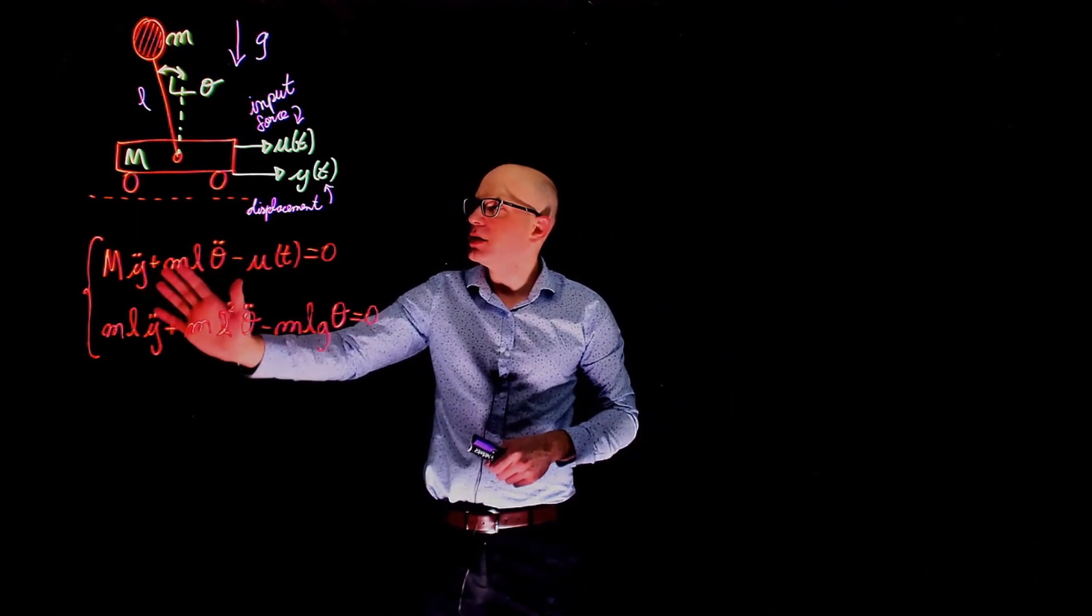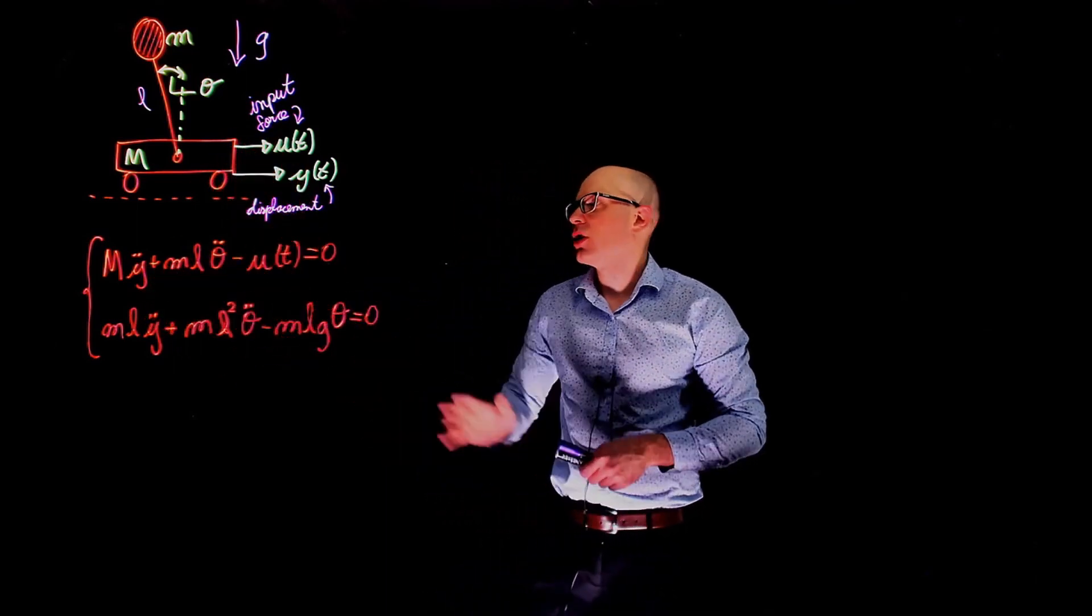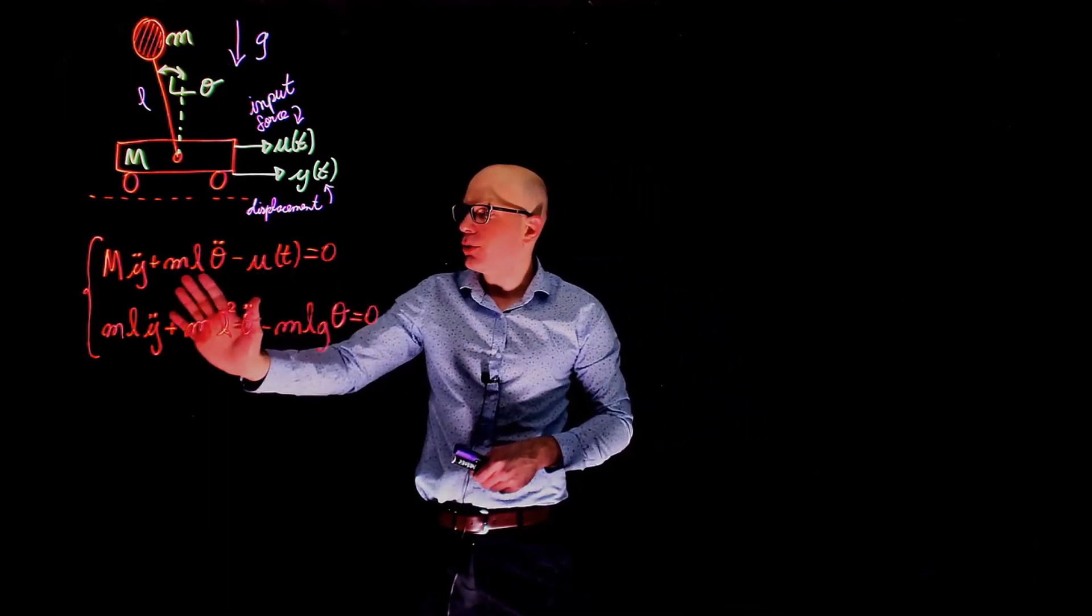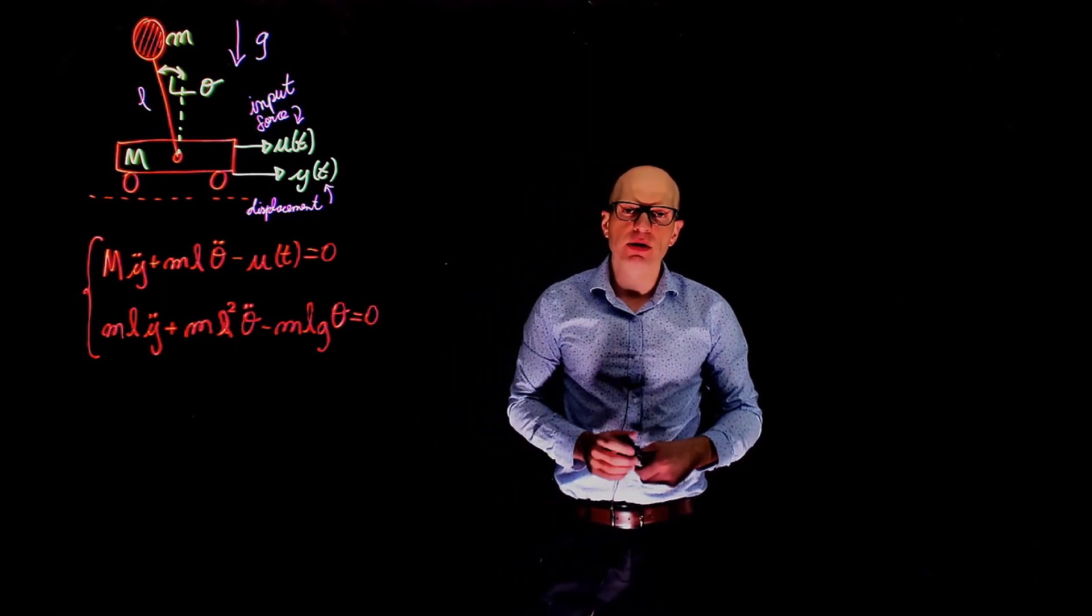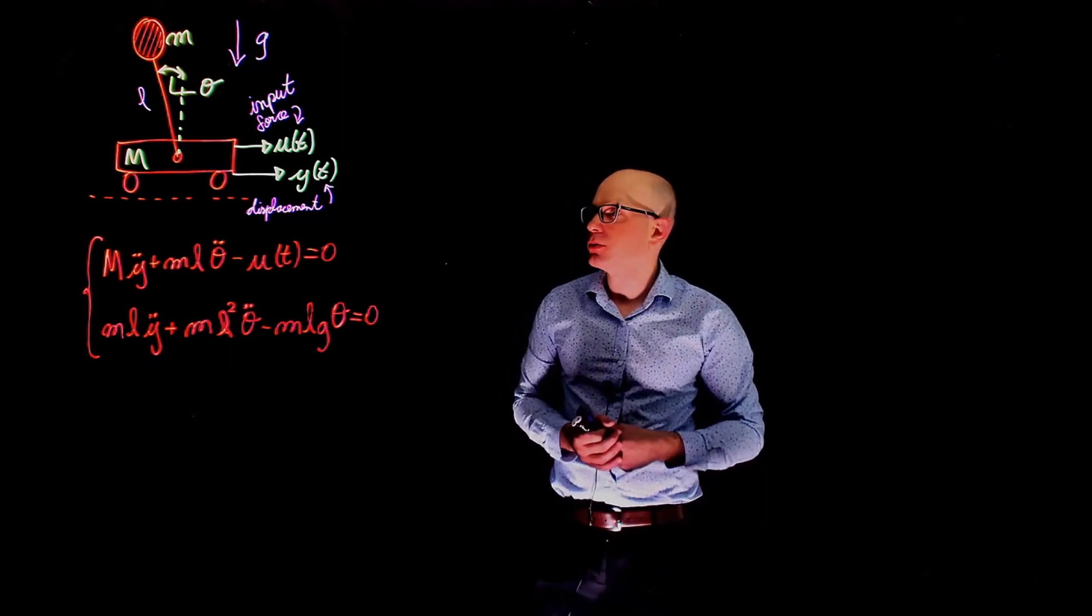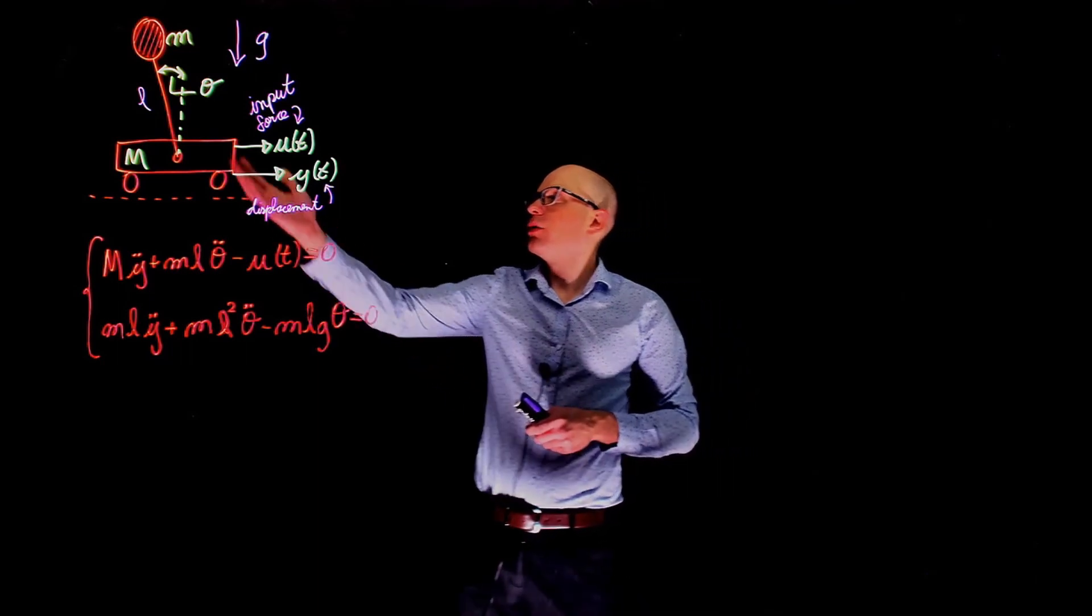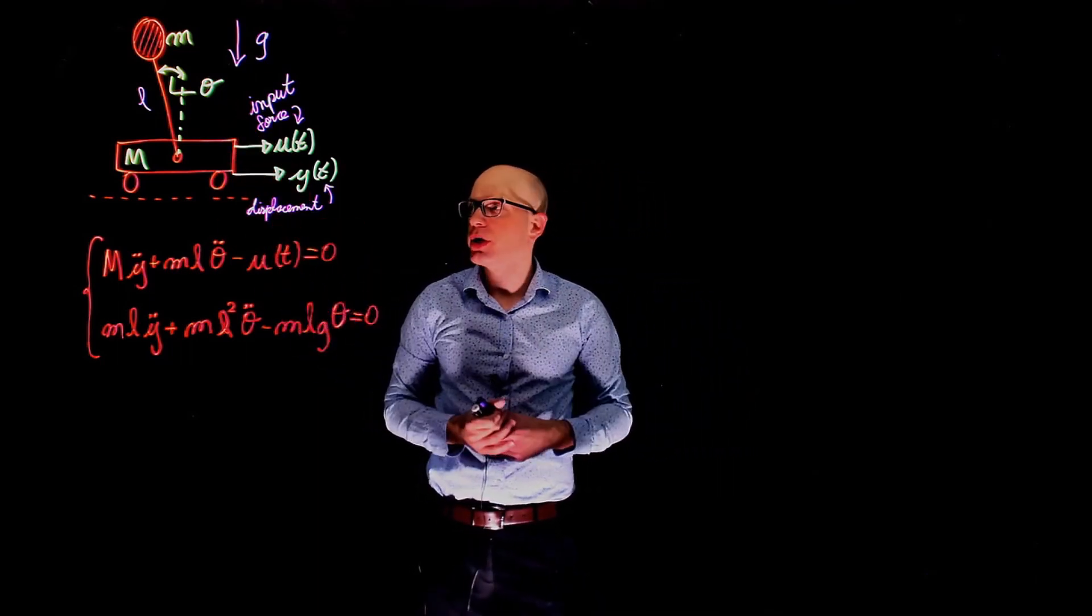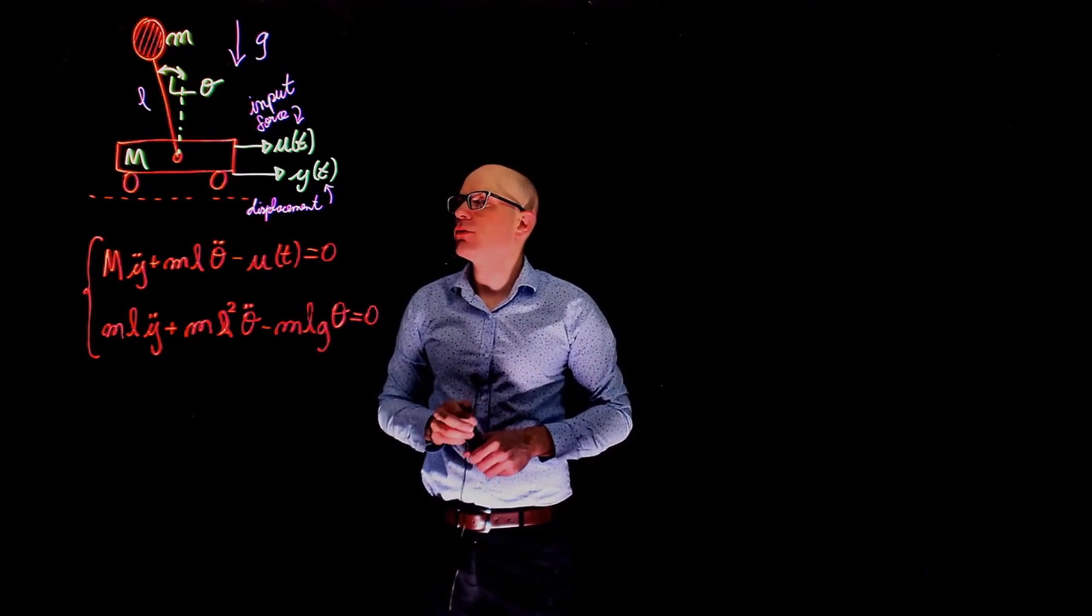These equations have been obtained based on this model and these are the linearized equations of motion for this system. And this is our starting point. Given these equations how can you represent them in a state space form? Again the first question here is to define the state space variables. What can store energy in this system? We have both the bob and the cart that can store energy. Both have masses and they can both store energy in the form of kinetic energy.